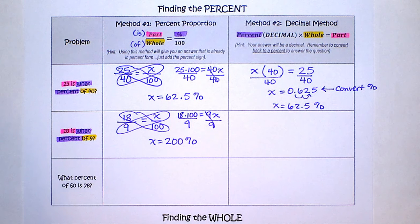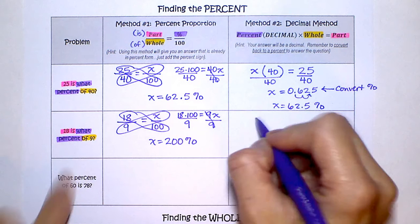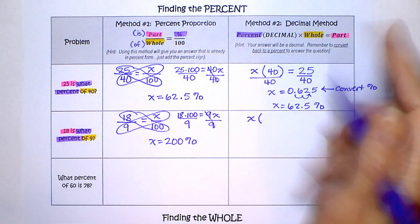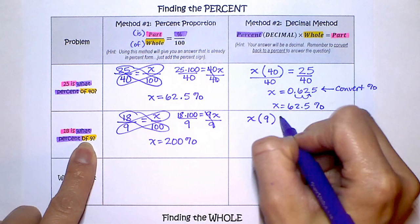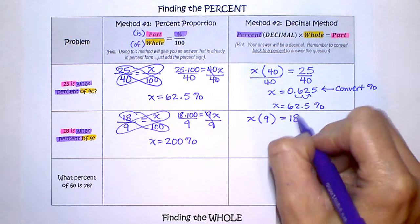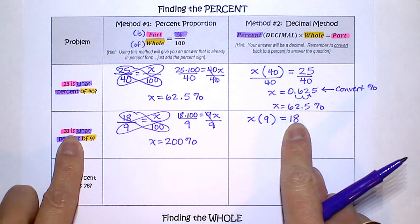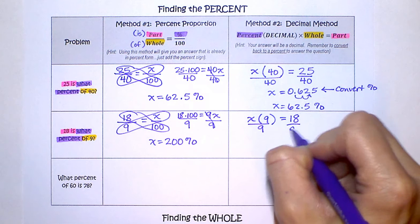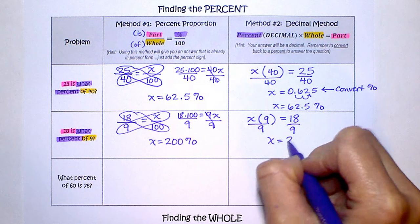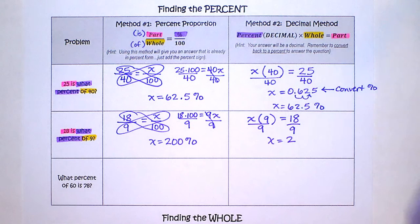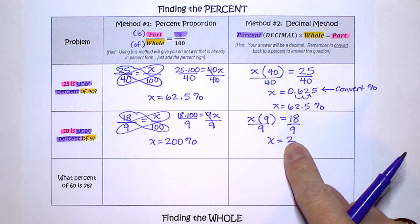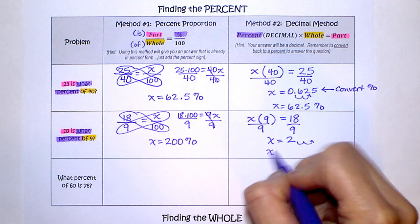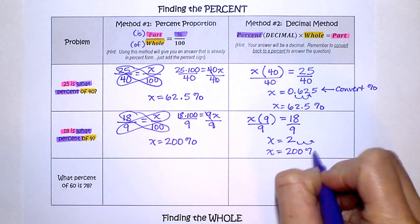Now to use the decimal method, we're going to take x, that's our percent we don't know, times the whole number, equals 18, that's the part. Now, opposite of multiplying is we're going to divide by 9. So x equals 2. But don't forget, that is the decimal answer. We still need to move this over two places, so x is in fact 200 percent.